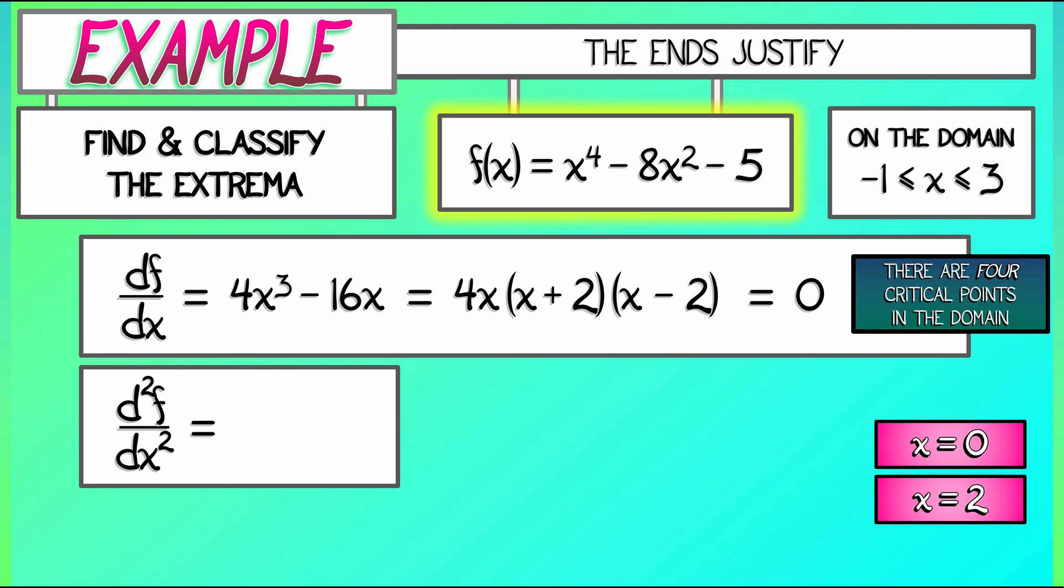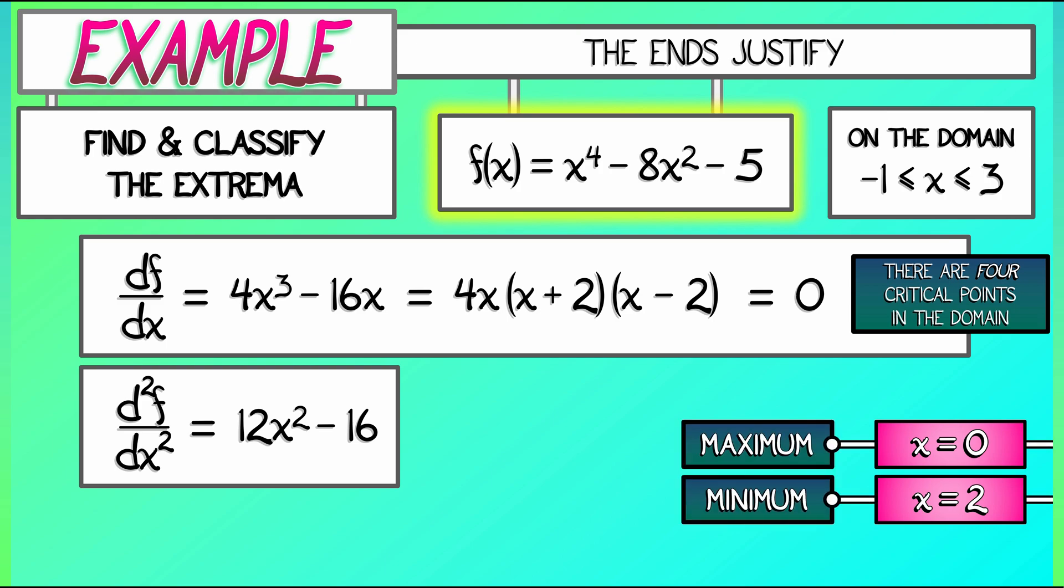We can compute the second derivative, which we did previously, and evaluate it at these two interior critical points to determine that x equals 0 is a maximum, x equals 2 is a minimum, just like before.